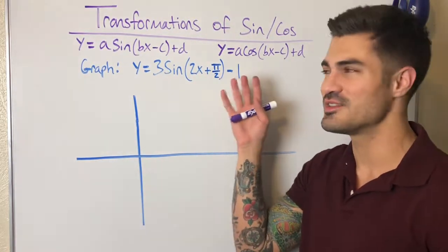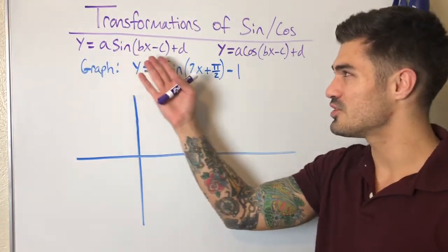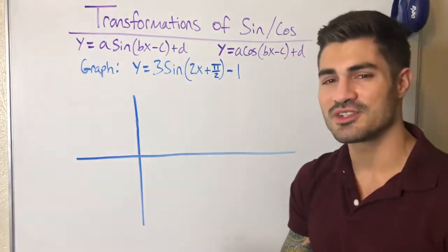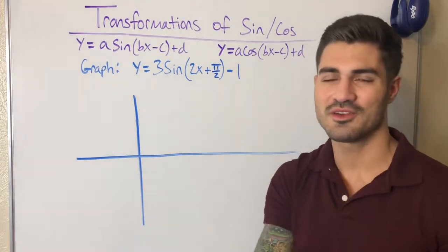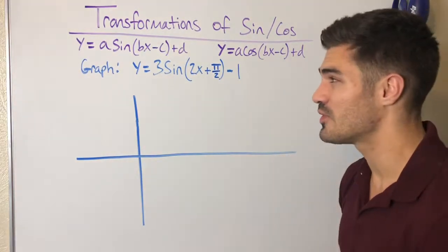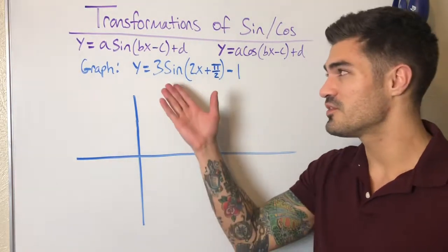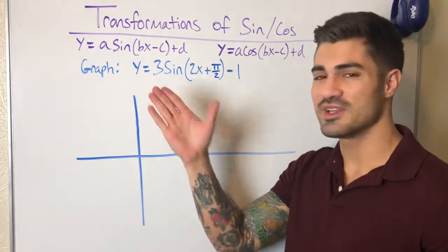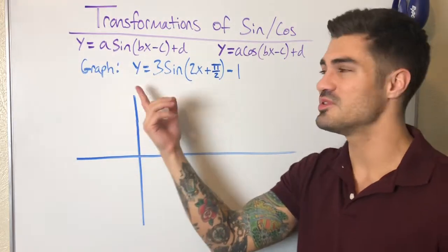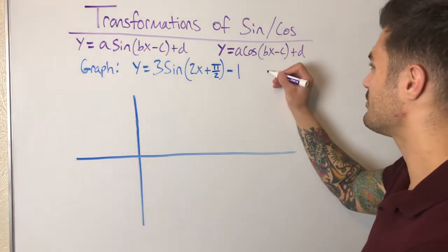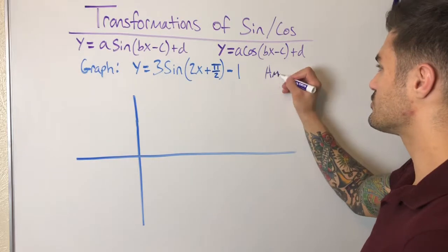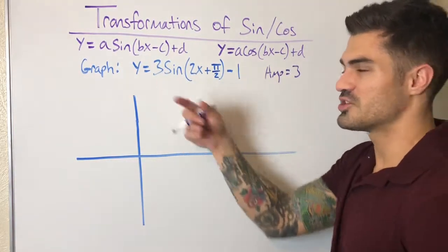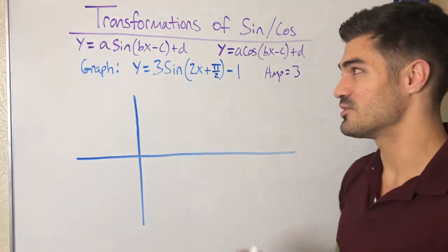I'm going to show you how you can graph something like this, and it's actually not as bad as it looks. Remember these are the general formulas — hopefully you know a little bit about amplitude and phase shifts. If not, click the other video. So the first thing: my amplitude is now three because amplitude is the absolute value of a. Normally the parent function is one, but now it's three — that's a vertical stretch we call amplitude.